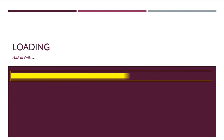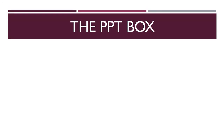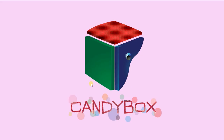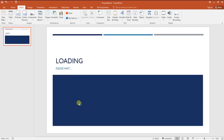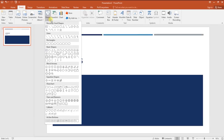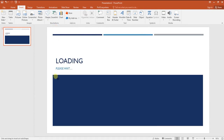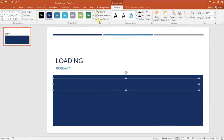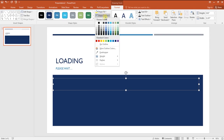Welcome to the PPT box. Today we will learn how to animate the shapes to achieve this awesome loading effect in PowerPoint 2016. Open your PowerPoint, click on insert and under the shapes tab, insert a rectangle by dragging the mouse button. Under the format tab, click on shape outline and add any contrasting color to the rectangle.